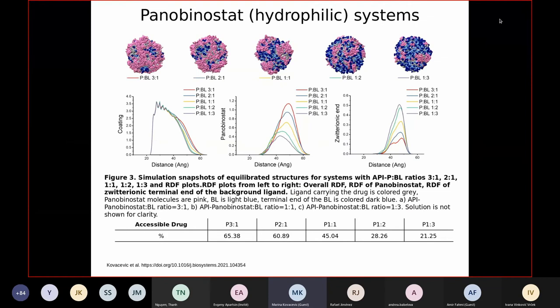Here we have panobinostat systems. So, as in the previous examples, background ligand is still colored blue, because we use the same one. Ligand that carries the drug is colored gray, because we use the same one. And the panobinostat drug is colored pink.